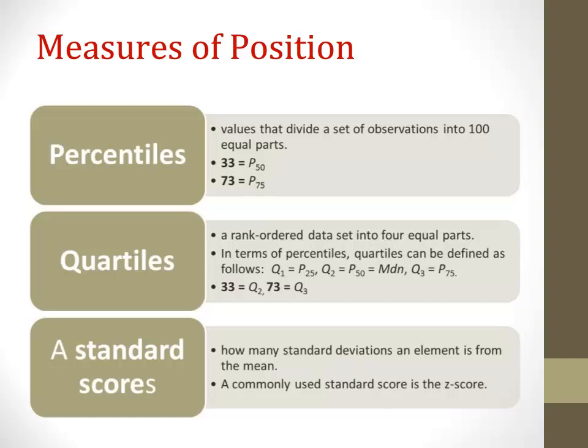So knowing this, what can we say about the score of 33? We could say that 50% of individuals in our distribution scored below 33.